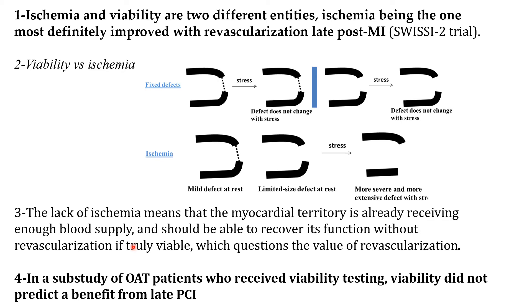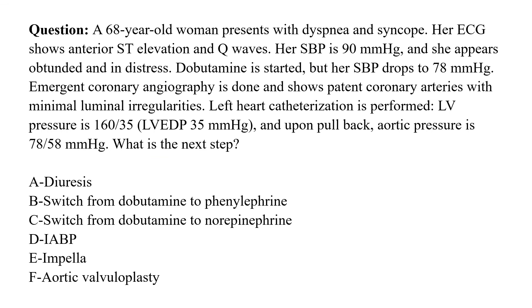In a sub-study of OAT patients who received viability testing, viability did not predict a benefit from late PCI. Next question. A 68-year-old woman presents with dyspnea and syncope. Her ECG shows anterior ST elevation and Q waves. Her systolic blood pressure is 90 and she appears obtunded and in distress. Dobutamine is started by the emergency department but her systolic blood pressure drops to 78 with dobutamine. Emergent coronary angiography is done and shows patent coronary arteries with minimal luminal irregularities. Left heart catheterization shows LV pressure of 160 over 35 with LVDP of 35 mmHg, and aortic pressure of 78 over 58 mmHg.